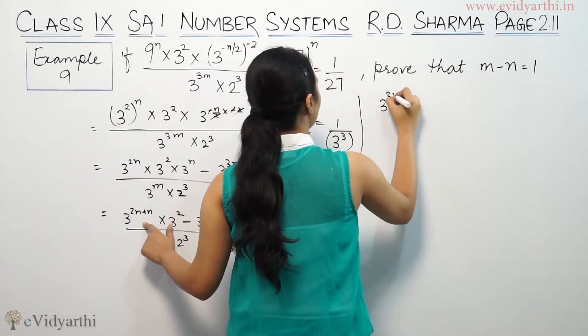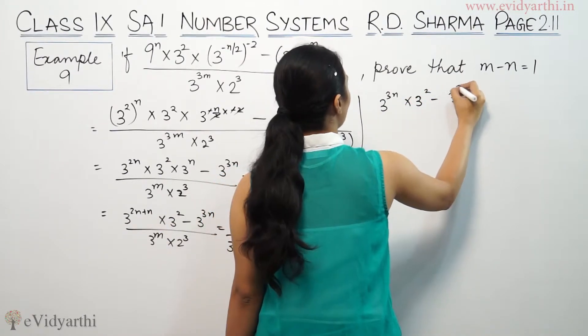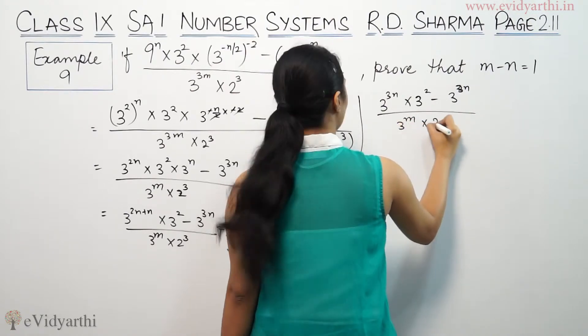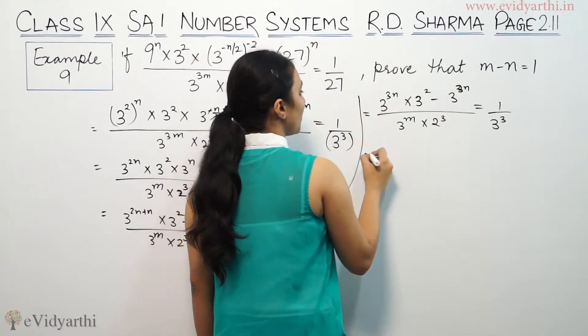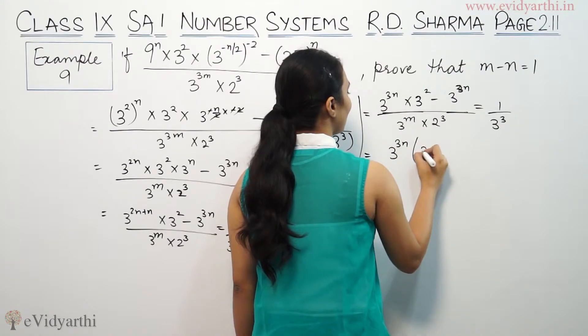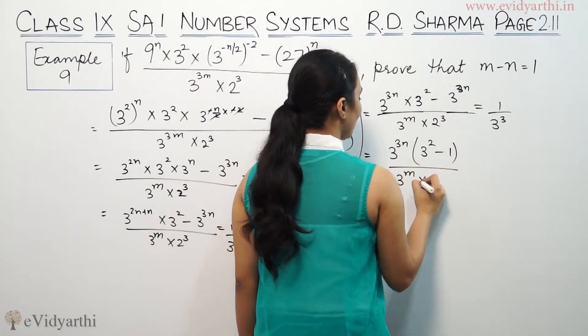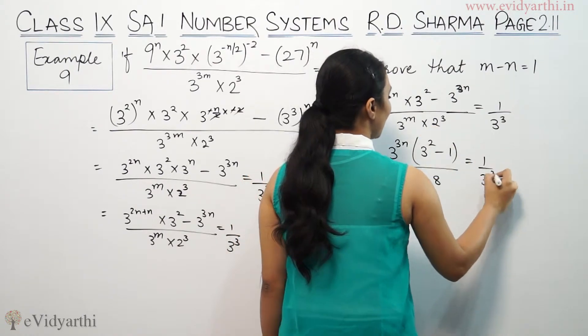So this is 3^(3n) × 3² minus 3^(3m) upon 3^m × 2³ equals 1/3³. We can take 3^(3n) common, getting 3^(3n) times the remaining terms upon 3^(3m) × 8.